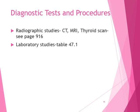Let's turn to page 916 and look at some diagnostic tests — table 47.1, which starts on page 914. We know about CT scans and MRIs — we talk about those in every chapter, and how if they're going to get dye, you need to check and be sure if they're allergic to anything. But the thyroid scan — let's look at that.